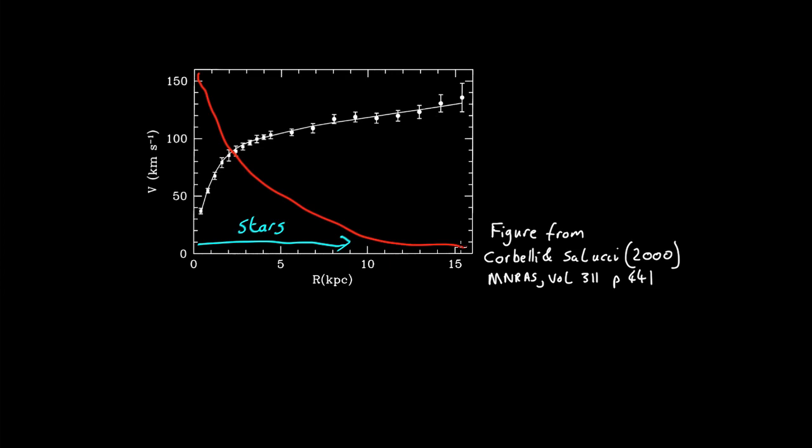If the mass was in the form of stars, you'd expect something that goes like this, which works pretty well out to about here, but there's a huge discrepancy over there. Even when all the stars are left behind, and all you're tracing is gas, and gas doesn't have much mass, the curve keeps on going up, which is very, very strange.